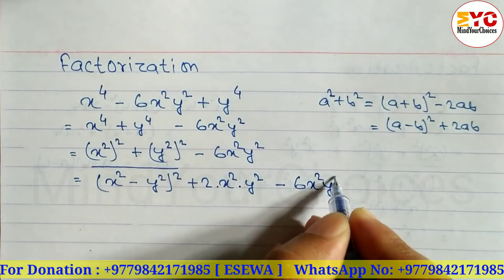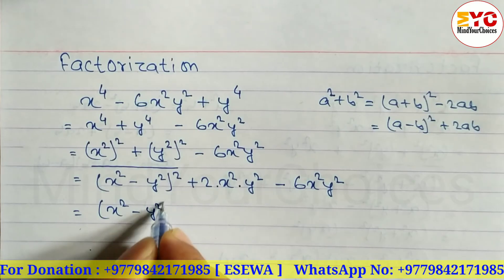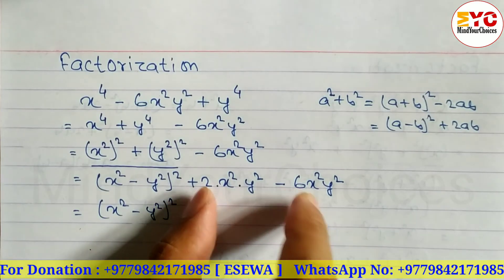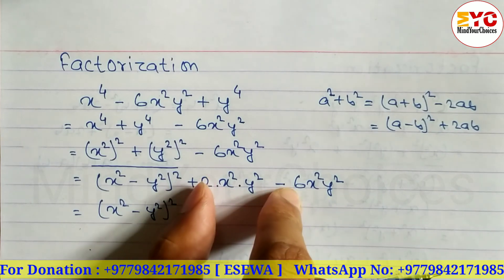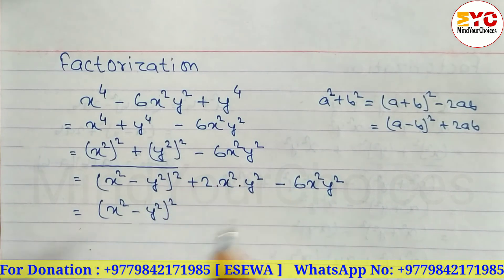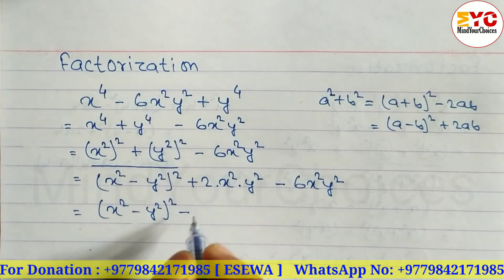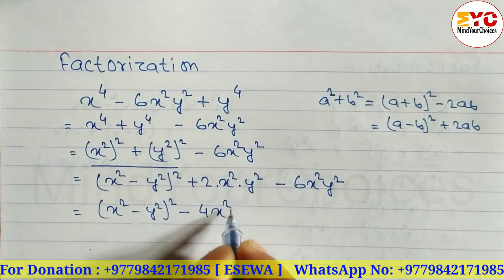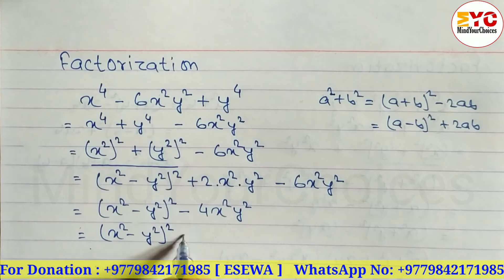So we have x squared minus y squared whole square plus 2x squared y squared minus 6x squared y squared. These two are like terms; we subtract and since 6 is greater, 6 minus 2 gives 4, with a minus sign. So we write x squared minus y squared whole square minus 4x squared y squared.